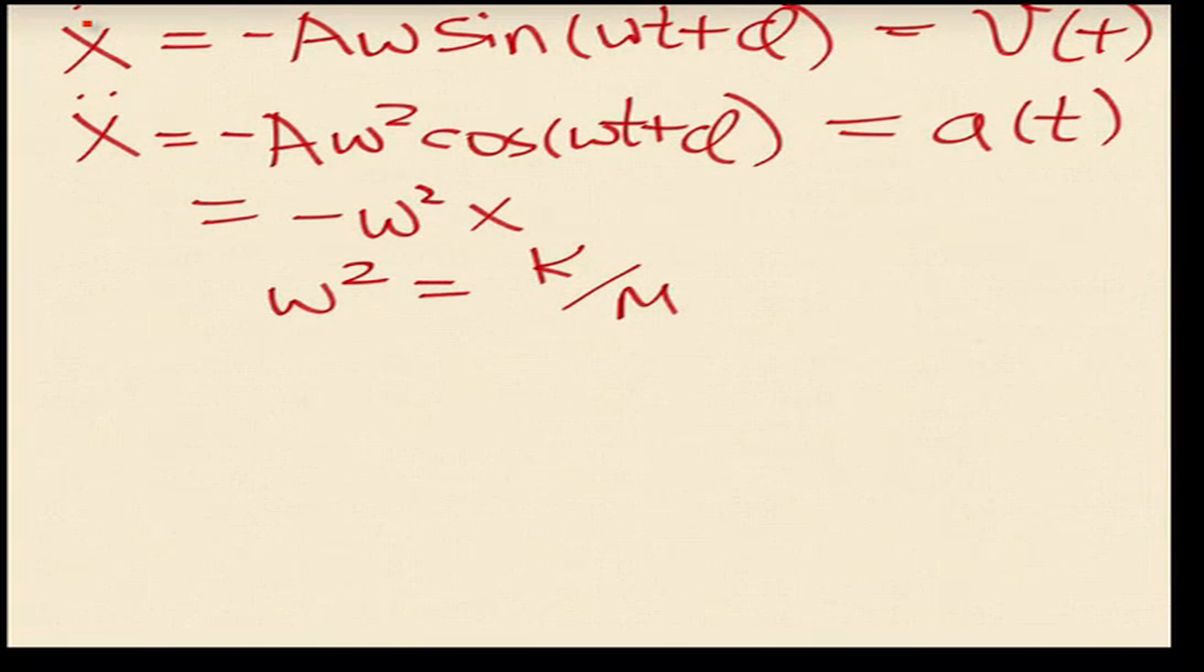So let's look a little closer at the solution. I have these two coefficients, A and phi, in my solution. Where do they come from? How do I assign them? These two come from really the initial condition of the oscillation. And again, the A is the amplitude.